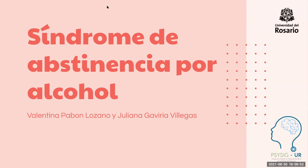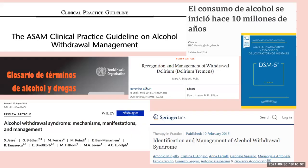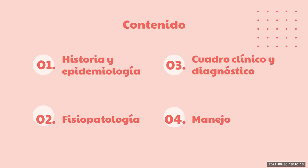Vamos a hablar un poquito sobre síndrome de abstinencia por alcohol. No prendo la cámara porque mi internet no está tan bueno. Nosotros somos Valentina Pagón y Juliana Gaviria, estudiantes de la Universidad del Rosario. Esta fue la bibliografía que utilizamos para hacer la charla. El contenido de hoy incluye historia y epidemiología del alcoholismo, fisiopatología del síndrome de abstinencia, cuadro clínico, diagnóstico y manejo.